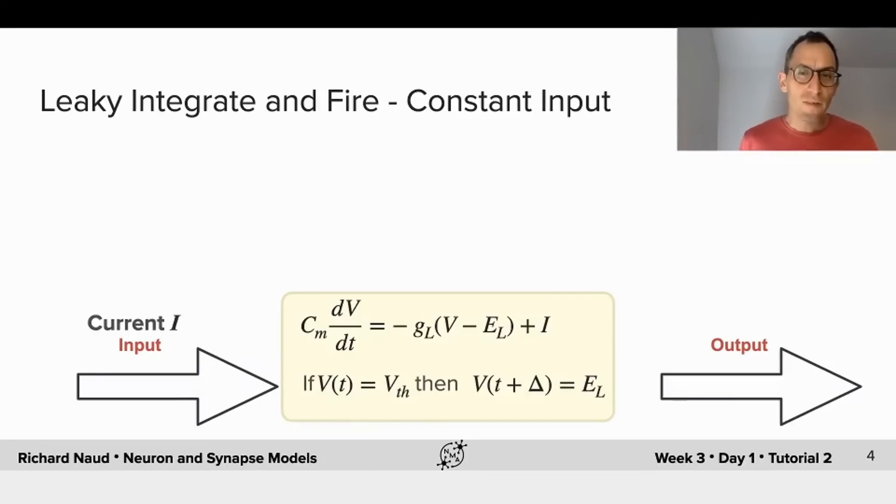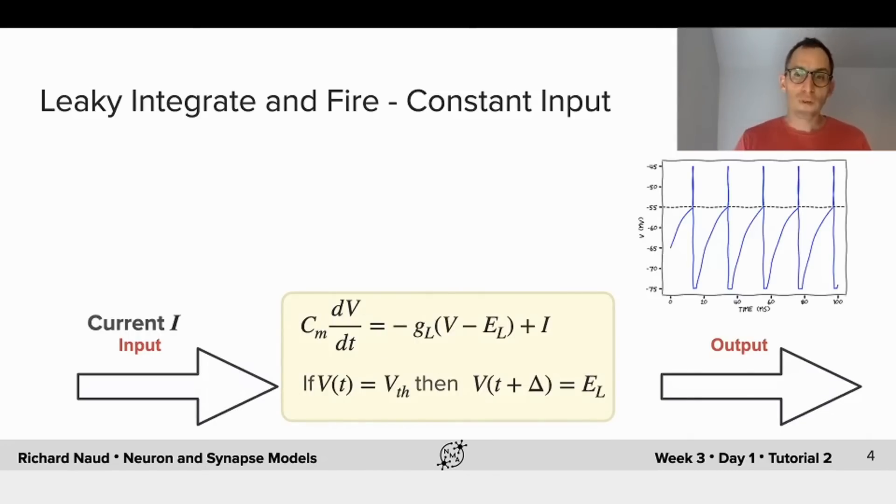So the simplest scenario is a condition where you have constant input, a constant current that is stimulating the neuron. If we consider a leaky integrate and fire model where this current is stimulating changes in the membrane potential until it reaches the threshold where the membrane potential is reset, then the responses will look a little bit like this.